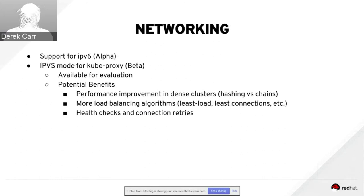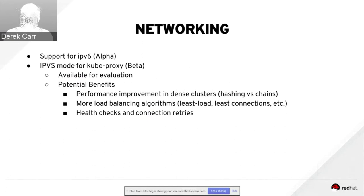On the networking side: alpha support was added for IPv6. In the last 1.8 update call we discussed alpha support for kube-proxy supporting IPVS instead of iptables — this has now graduated to beta in the 1.9 release. IPVS has a lot of potential long-term benefits for improving performance on dense clusters with a large number of services, where writing and evaluating iptables rules was slow. It also potentially offers more load balancing algorithms and improvements around health checks and connection retries.